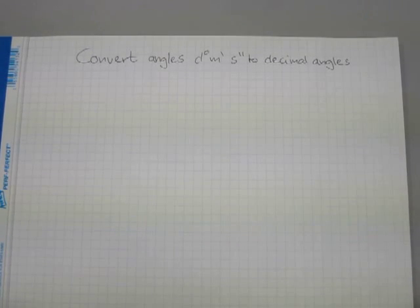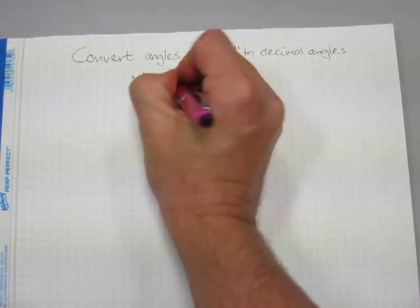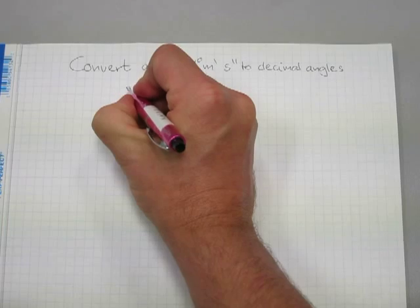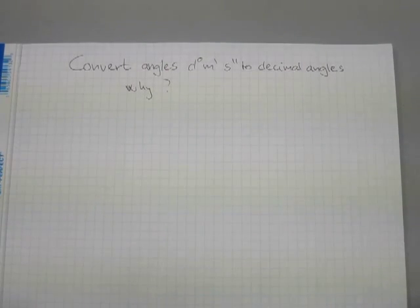In this video I will show you how to convert angles in degrees, minutes, and seconds to decimal angles. Before we convert anything, why bother? Why convert angles from degrees, minutes, and seconds to decimal angles?